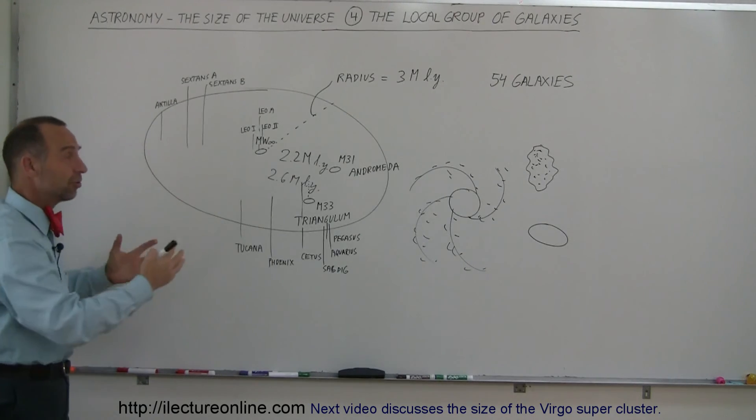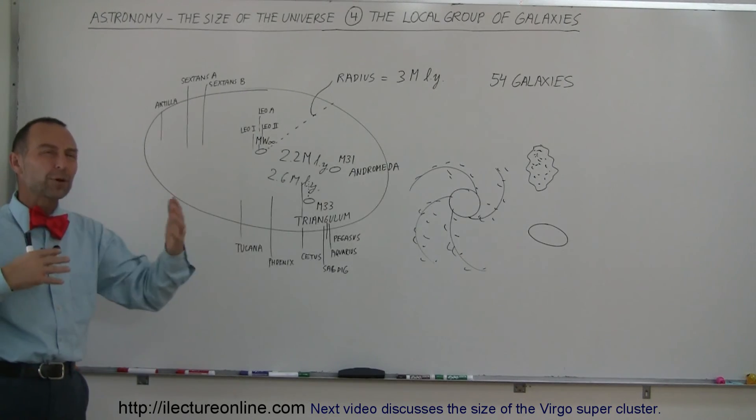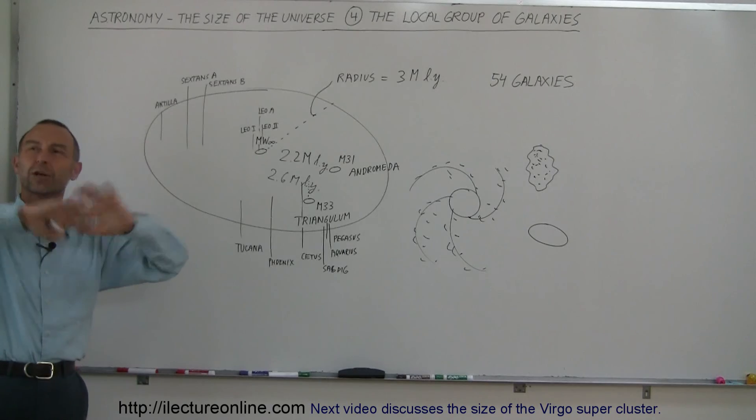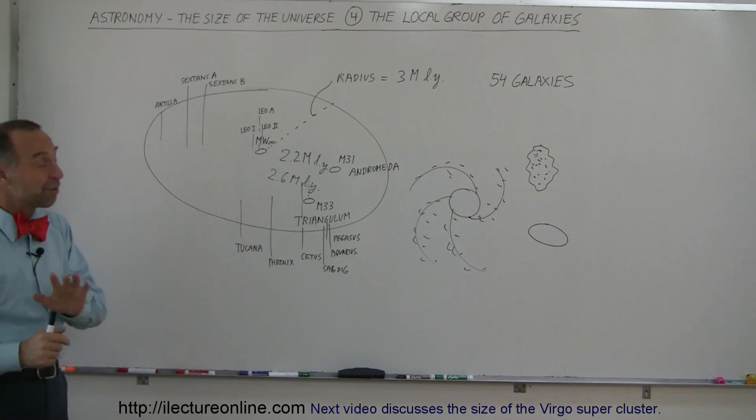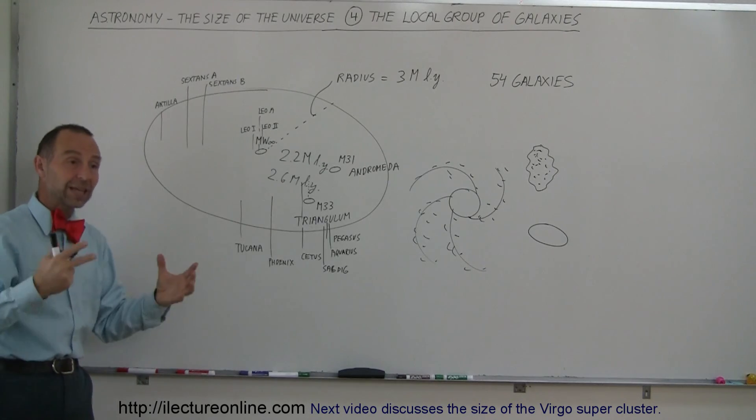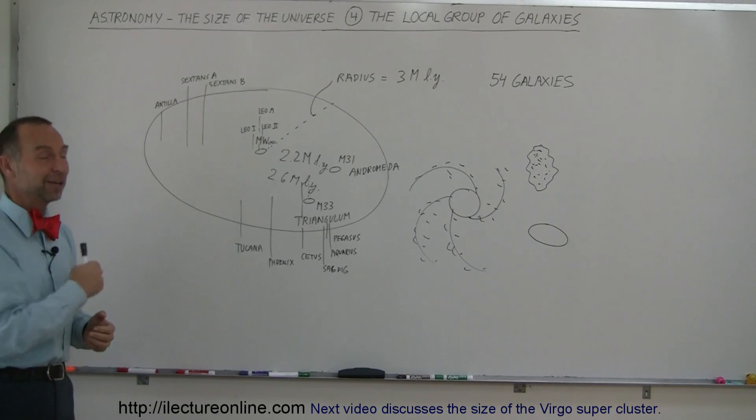But that gives you a feel for what our universe is like. Our universe is filled with these clusters - they're called clusters of galaxies - and they're all over the place. Everywhere we look, in the far reaches of the universe, in all directions, we see these types of clusters of galaxies. And what we found was that the clusters tend to cluster together in what we call superclusters. And that's the topic of our next video.